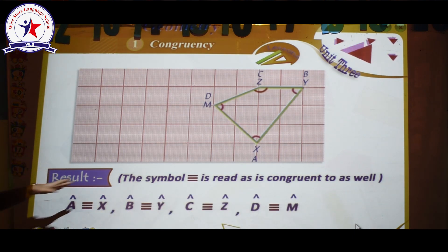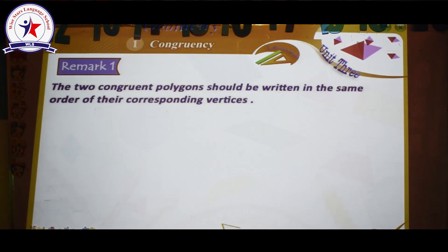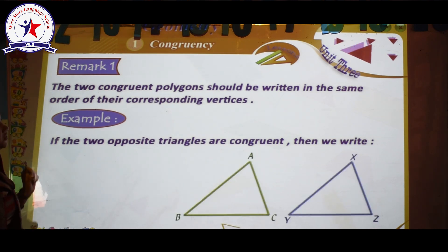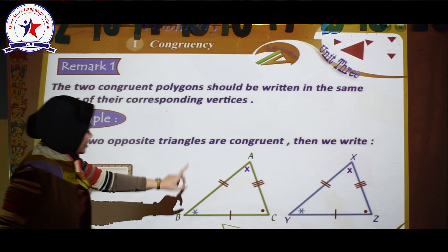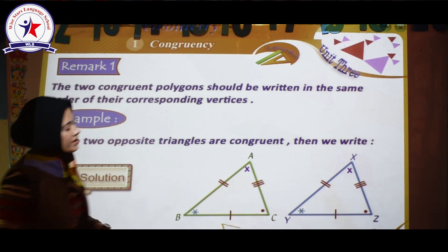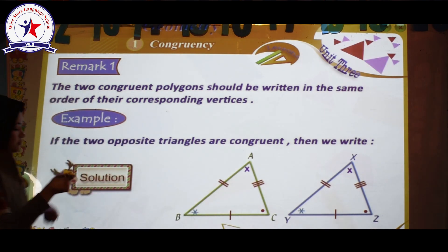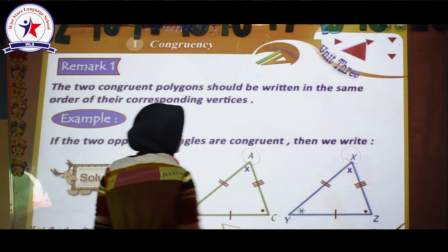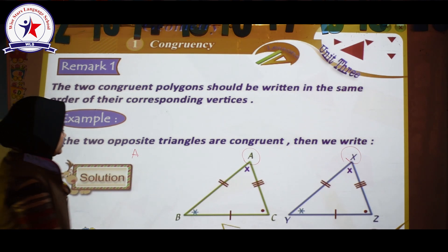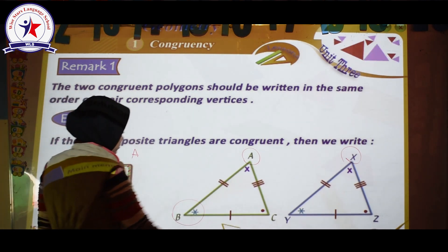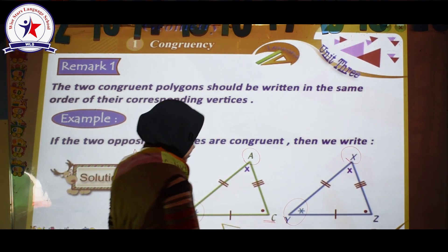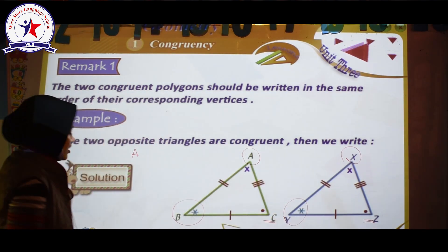The two shapes are congruent. The congruency symbol is read as 'congruent to.' Remark number one: the two congruent polygons should be written in the same order of their corresponding vertices. For example, if two triangles are congruent, we write triangle ABC and triangle XYZ. Here the measure of angle A is exactly the same as the measure of angle X — we have the same mark, cross and cross. Then measure of angle B is exactly the same as measure of angle Y — same mark, star and star. Measure of angle C is exactly the same as measure of angle Z — same mark, dot and dot.